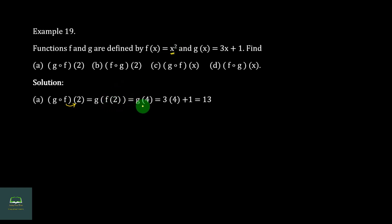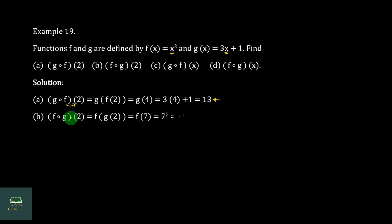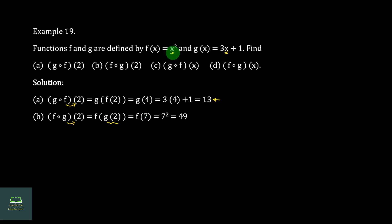We will call G∘F of 2. First we find f(2): 2 squared equals 4. Then we call G of 4. G of 4 equals 3 into 4 plus 1, which is 13. Then for F∘G of 2: G of 2 equals 3 into 2 plus 1, so 6 plus 1 equals 7.